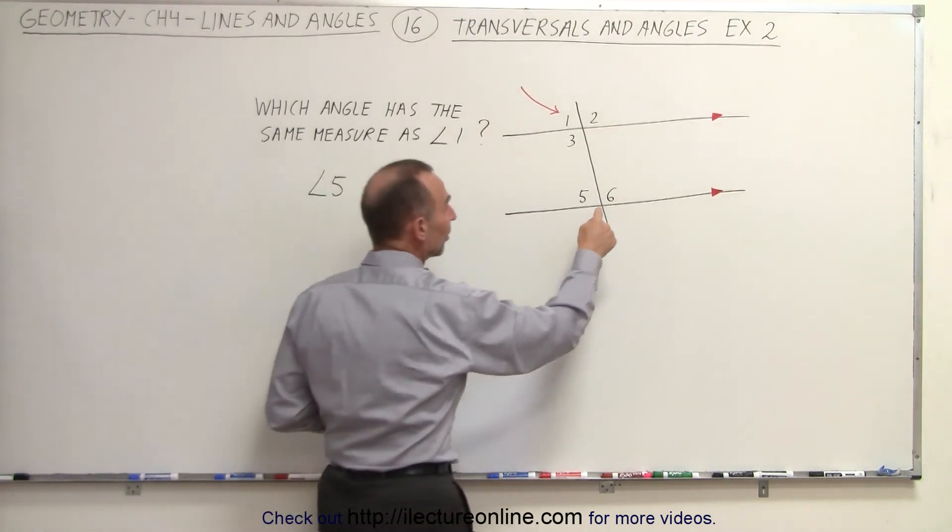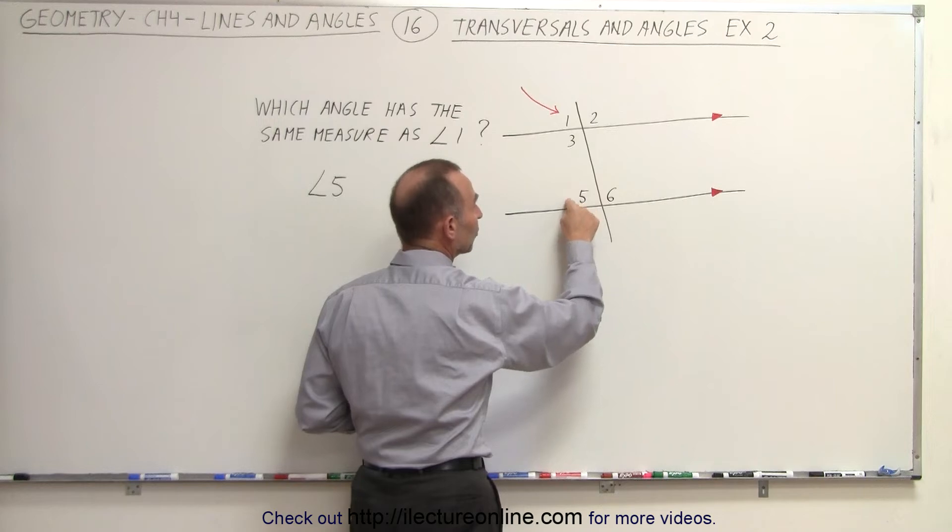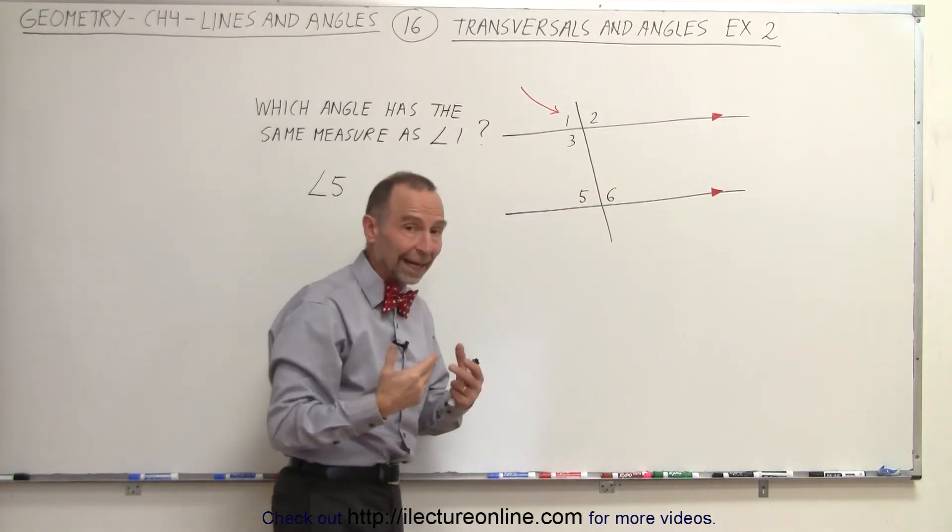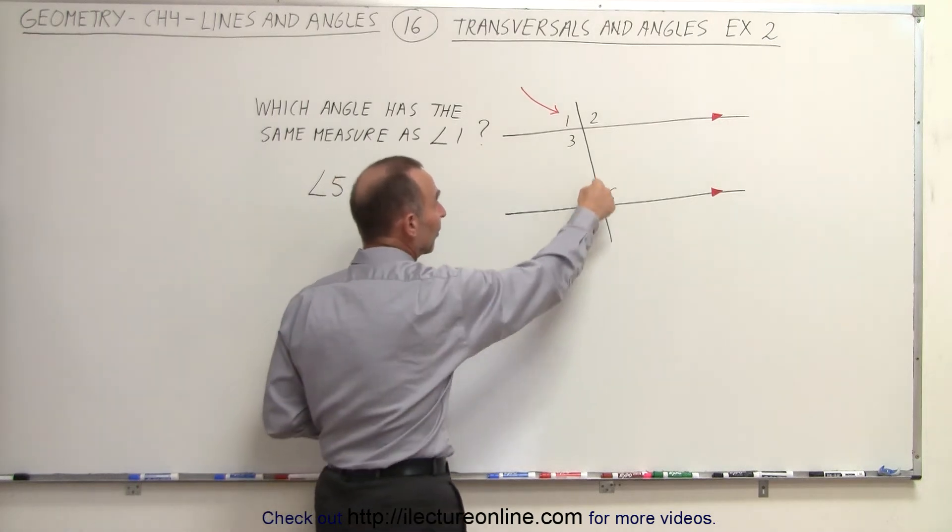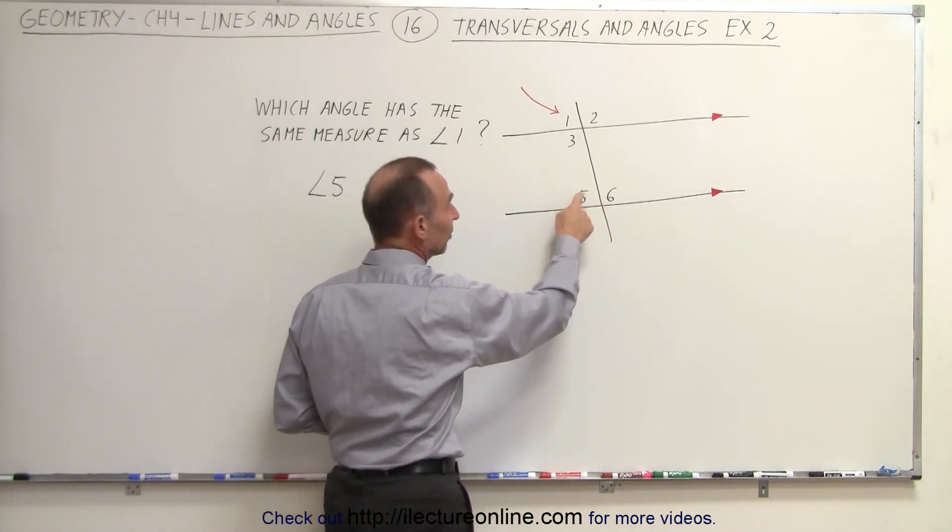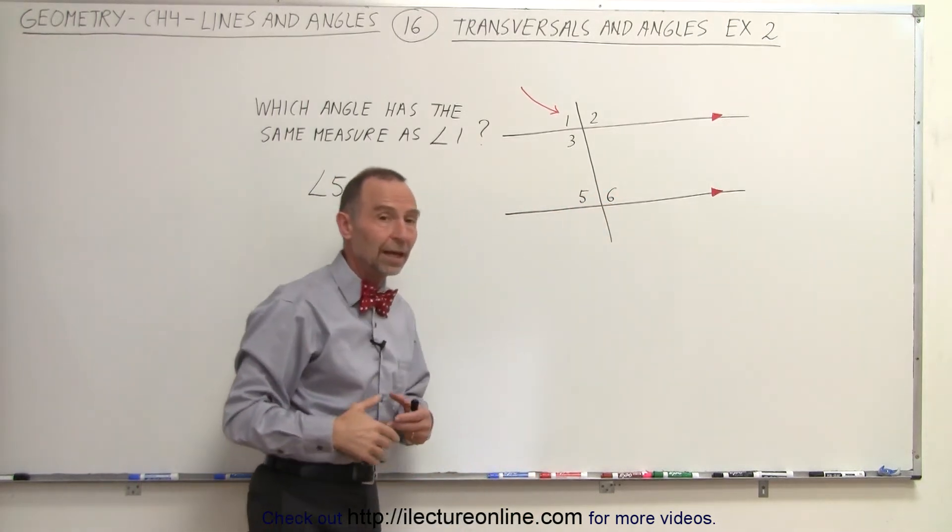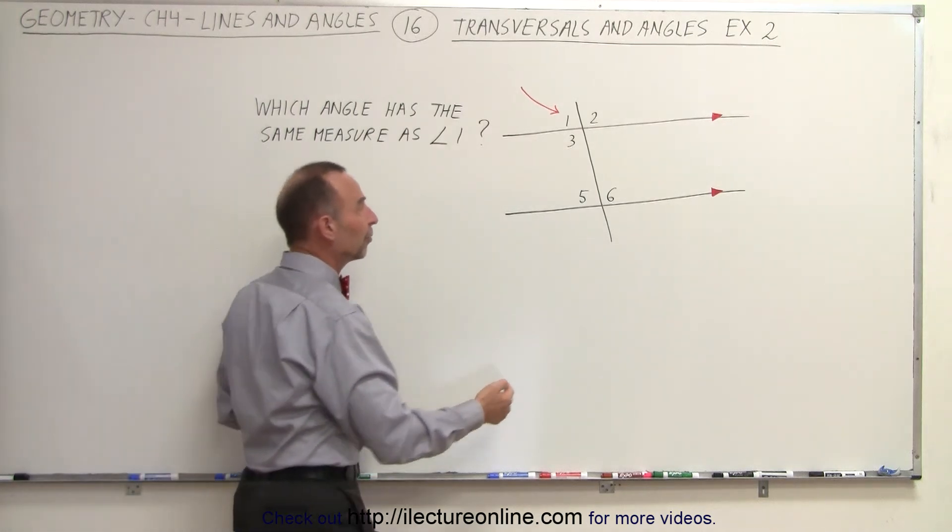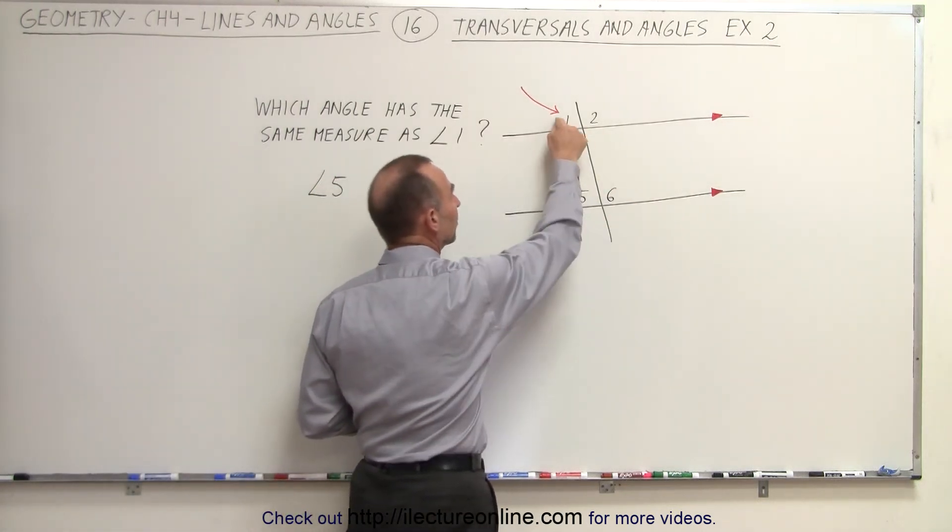Now looking at angle 6, since angle 6 is supplementary to angle 5, they cannot have the same measure unless they're 90 degrees. You can see that angle 5 has a measure less than 90 degrees, therefore angle 6 must have a measure greater than 90 degrees, so the measure of angle 6 cannot be equal to the measure of angle 1.